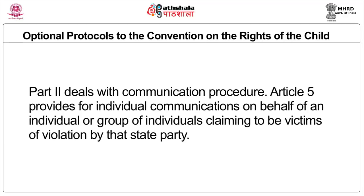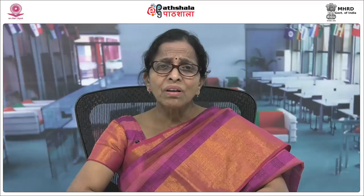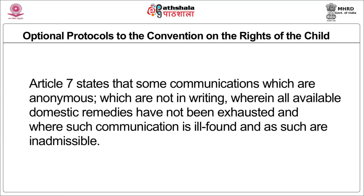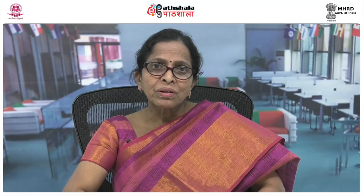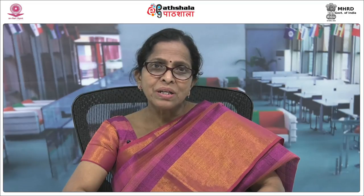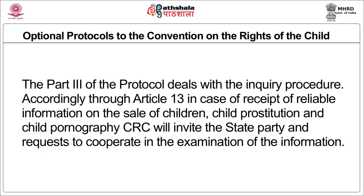Part 2 deals with the communication procedure, which is the major part. Article 5 provides for individual communications on behalf of an individual or group of individuals claiming to be victims of a violation by a state party. Article 6 insists on states taking interim measures to avoid possible irreparable damage to the victims. Article 7 states that some communications which are anonymous, not in writing, or where all available domestic remedies have not been exhausted, or where such communication is ill-founded, are not admissible. Through provisions of Article 11, the committee may invite the state party to submit further information about any measures taken in response to the views of the committee.